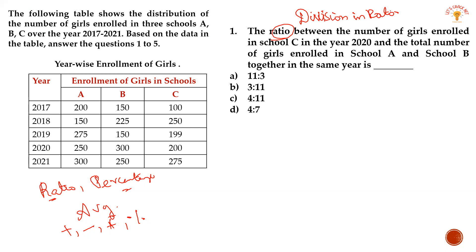Three different schools. Girls are enrolled in enrollment over the years from 2017 to 2021. In this case, you don't have any percentage calculation. The numbers are not in any unit — not in thousands or lakhs — straight numbers: 200, 150, 100. So, very easy to calculate. The question asks for the ratio between the number of girls enrolled in school C in the year 2020 and the total number of girls enrolled in schools A and B together in the same year.